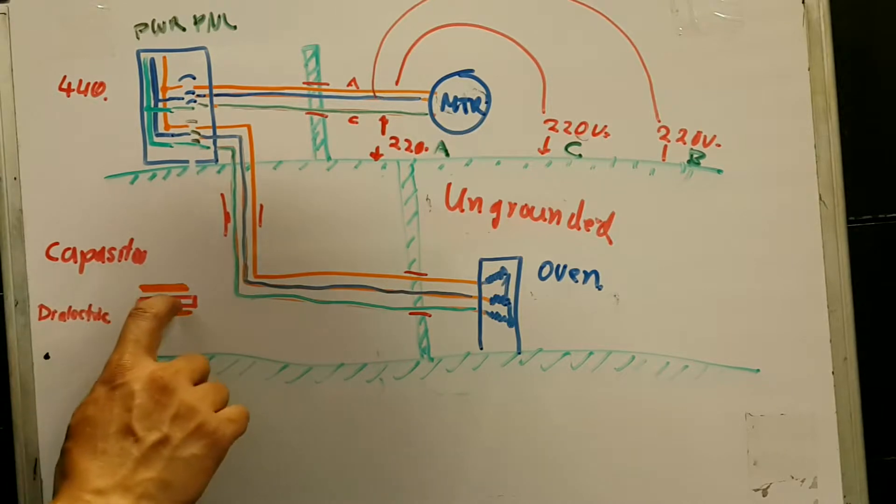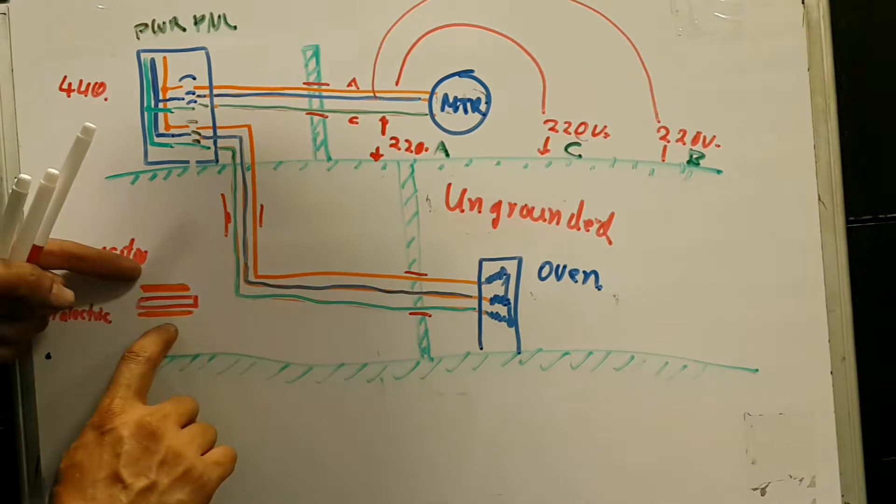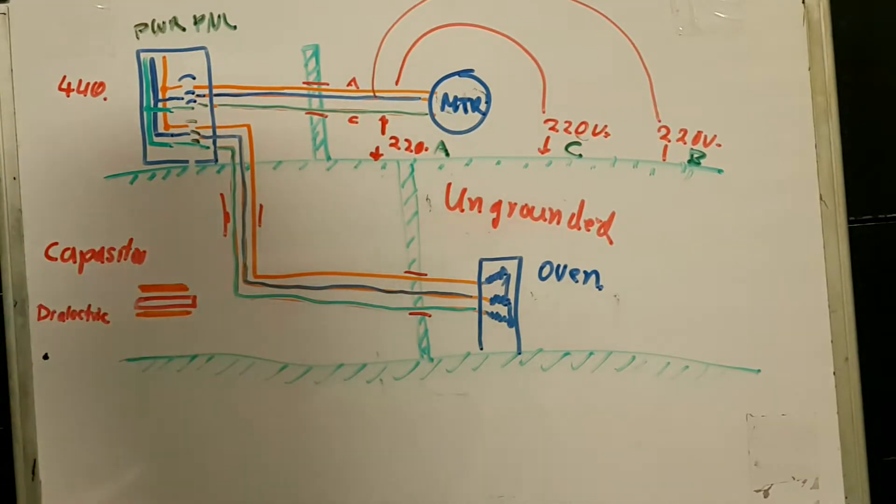capacitors have a dielectric, which is in the center, which is the insulator, and on the top, you got a plate, or two plates, that are separated by the insulator.